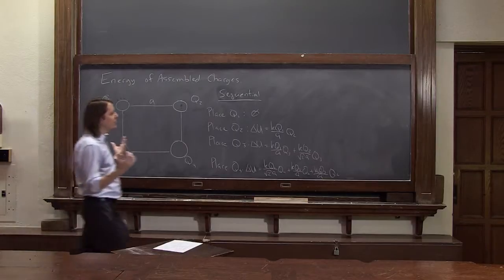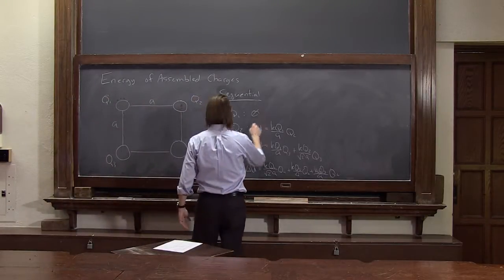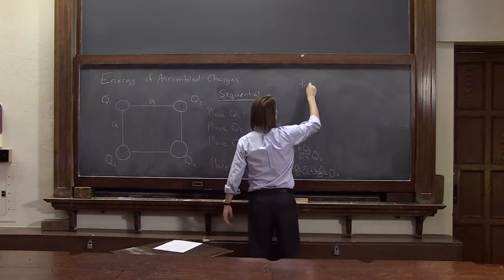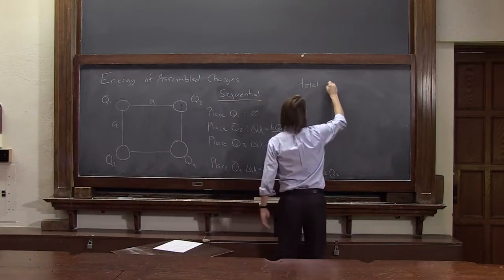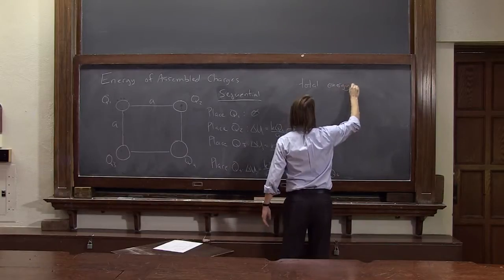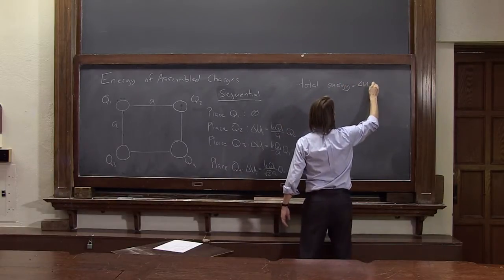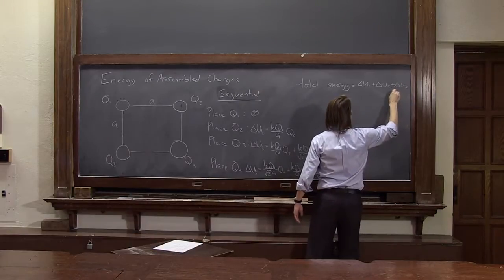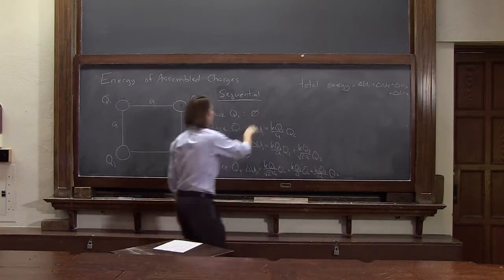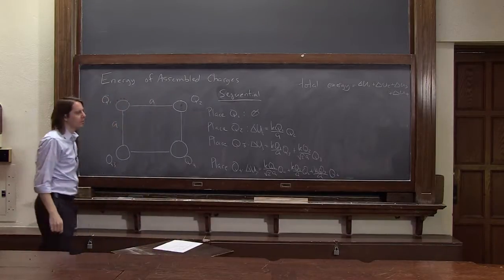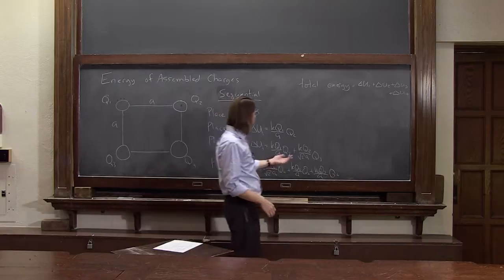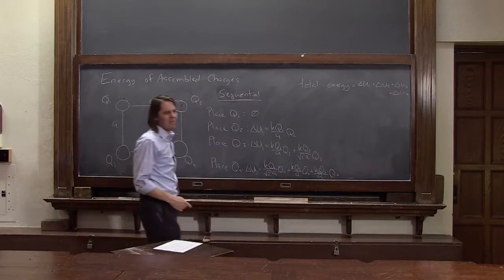So the total energy to create this thing, if we call this U1, U2, U3, and U4, so the total energy is just delta U1 plus delta U2 plus delta U3 plus delta U4. That one was zero. It was right here. So you just add them all together. And it makes a mess because we've got to write, what is it, three, four, five, we've got to write six terms. So it's kind of ugly.